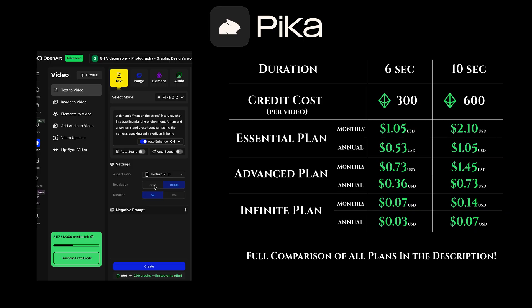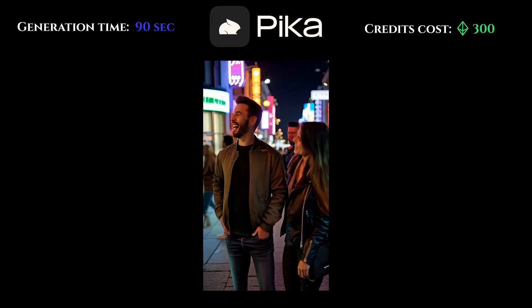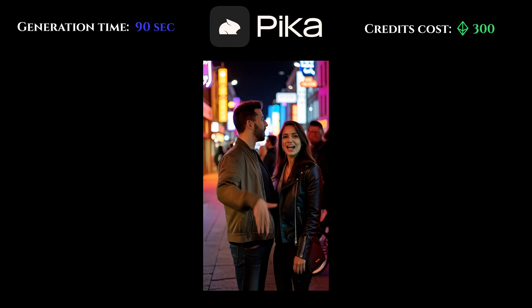Pika 2.2 — for a five-second video it's 300 credits, and a ten-second video is 600 credits. The cheapest option with Pika 2.2 is 720p five seconds at 150 credits. When you bump it up to 1080 it jumps to 300 credits, and for ten seconds it's 600 credits. We're going five seconds at 1080. Pika 2.2 — yeah, this one's not great. Pretty weird physics as well.